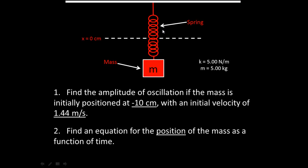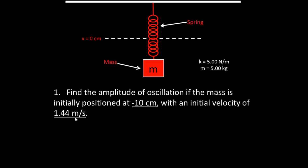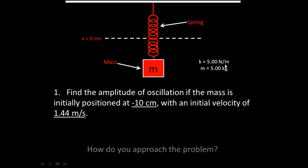We're given a mass hanging down from a spring and asked to answer two questions. The first is to find the amplitude of oscillation if the mass is initially positioned at negative 10 centimeters with an initial velocity of 1.44 meters per second. The spring constant k equals 5 newtons per meter and mass equals 5 kilograms. The dotted line represents the spring at equilibrium, and since the mass is below that line, the spring is not at equilibrium.